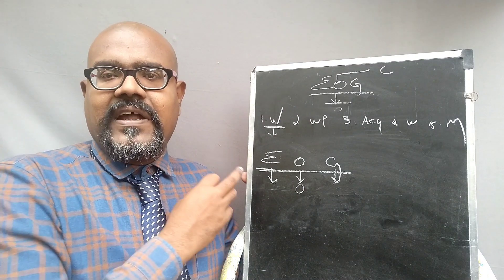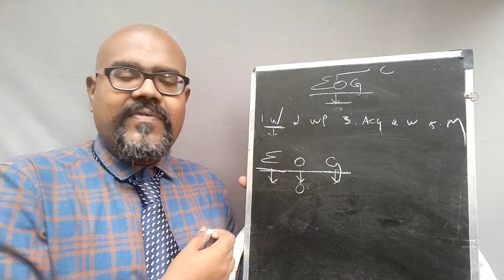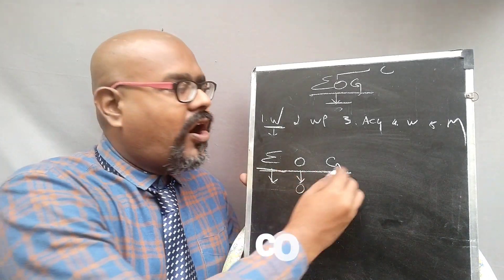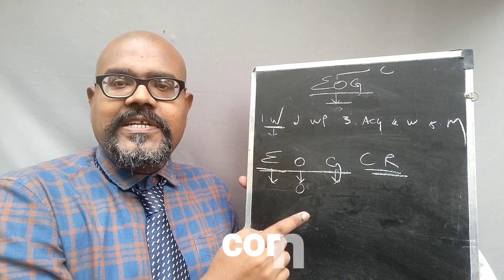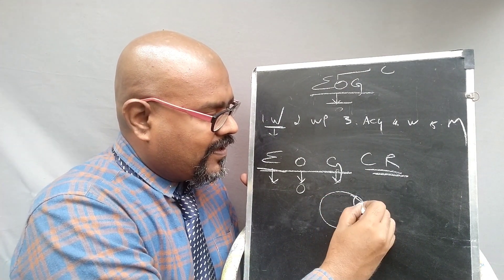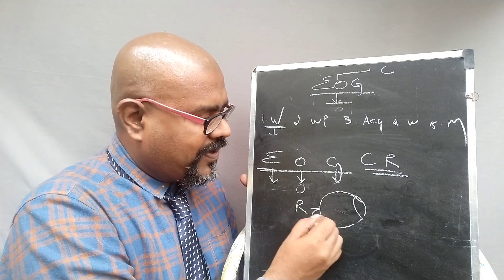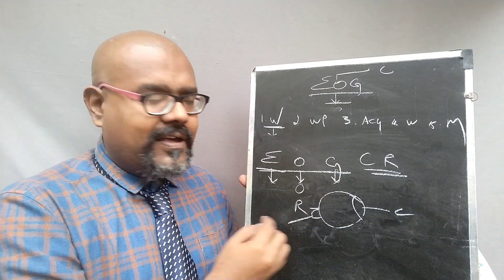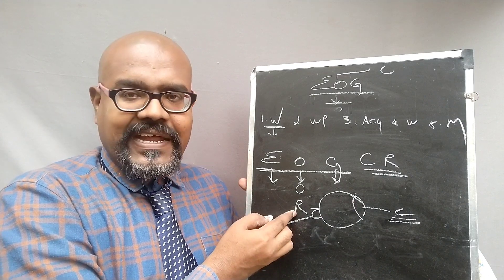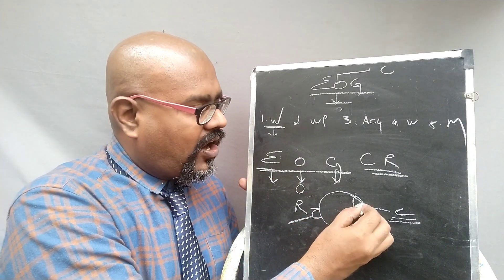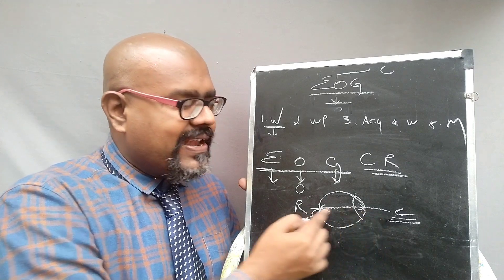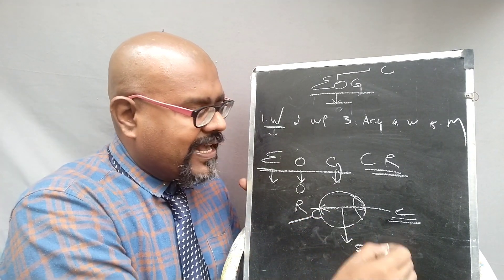This particular EOG is a measuring technique particularly for measuring the corneoretinal standard potential between the front and the back of the human eye. If this is the human eye, the frontal portion is called as the cornea, and the back portion — the third layer of the eye — is called as the retina. Measuring the corneoretinal standard potential between the front and the back of the eye is called as Electro-Oculography.